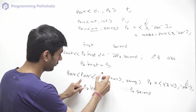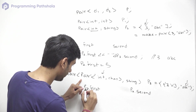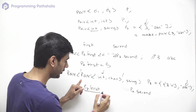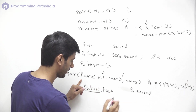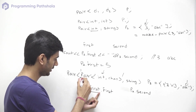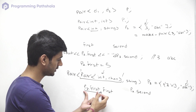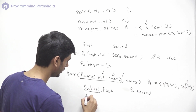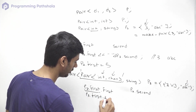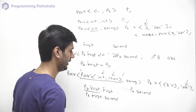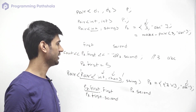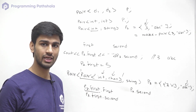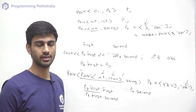To access the first value of the inner pair, since p3.first points to that pair, we use p3.first.first. To access the second value of the inner pair we use p3.first.second. These are the mostly used operations with pairs. We can also declare a vector of pairs or declare a pair with a vector as an object.